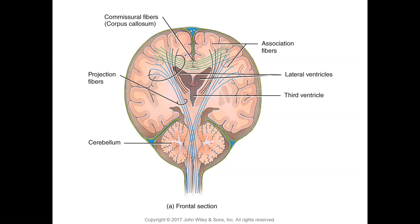The corpus callosum is a prominent commissural fiber tract that is readily observable in a mid-sagittal section of the brain. It connects the two cerebral hemispheres. Looking at this model: the blue projection fibers, the green commissural fibers, and the red association fibers can be identified, along with the lateral ventricles and third ventricle.